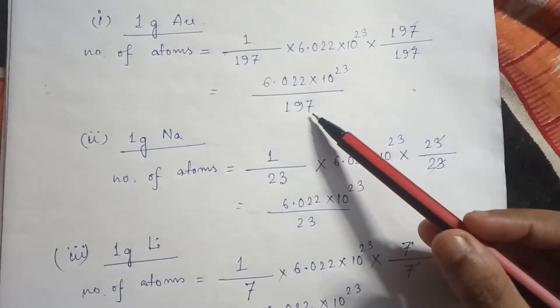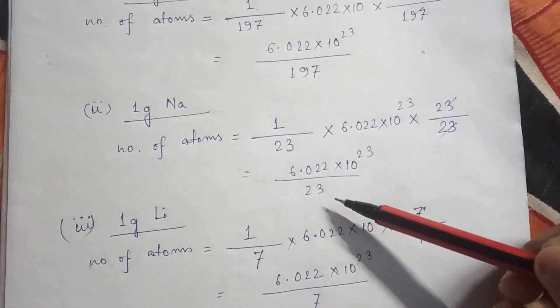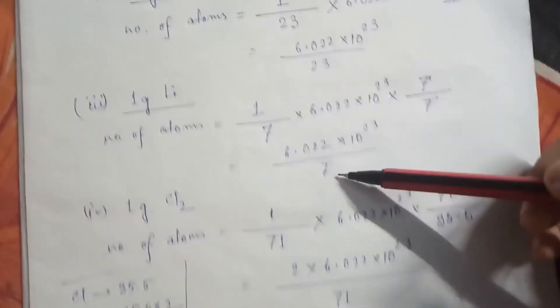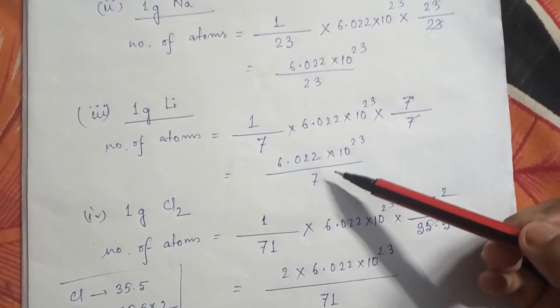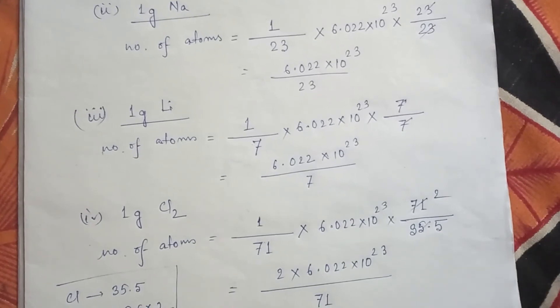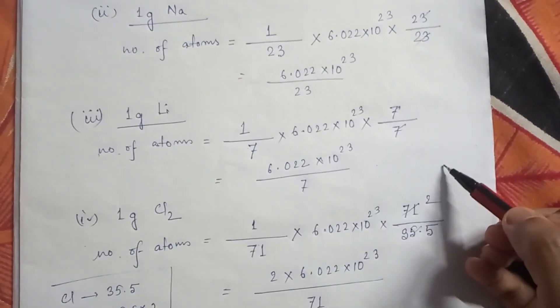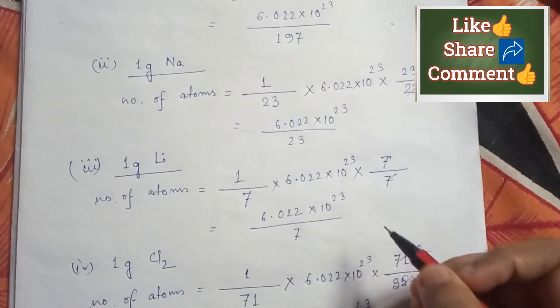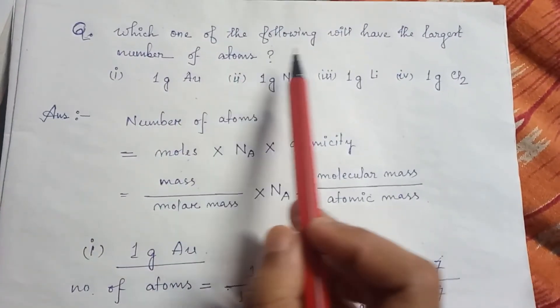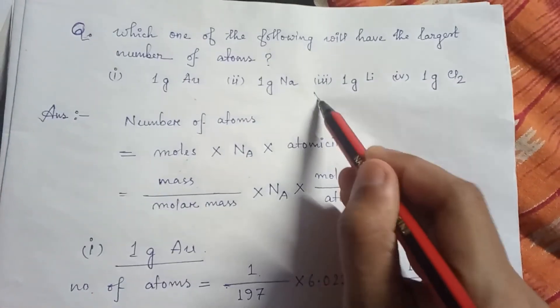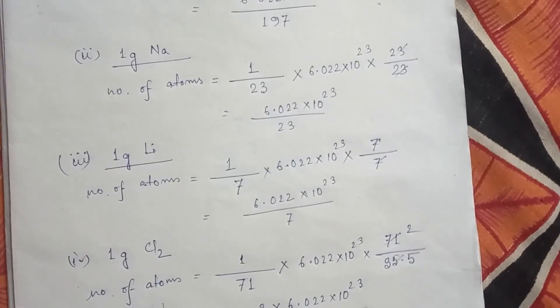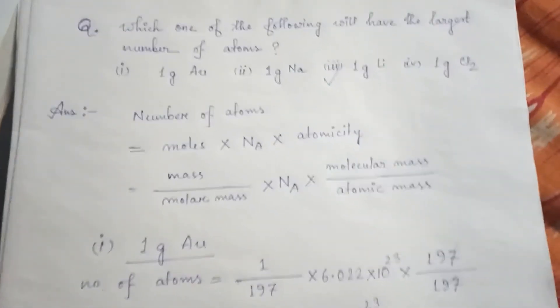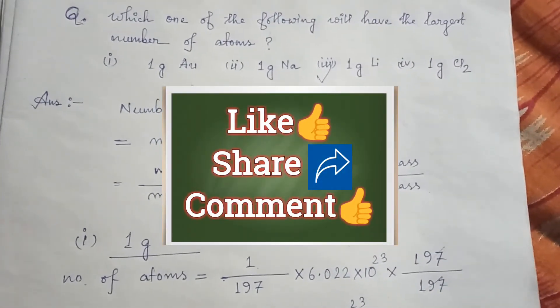Comparing all four cases: the denominators are 197 for gold, 23 for sodium, 7 for lithium, and 71 for chlorine. The smallest denominator is 7, so the result will be the largest for lithium. Therefore, one gram of lithium will have the largest number of atoms. I hope this video is helpful. If it is, don't forget to subscribe, like, share, and comment. Thank you.